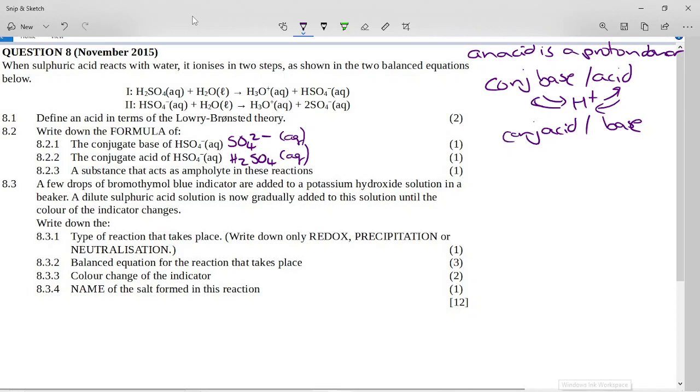Now it says to you a substance that acts as an ampholyte in these reactions. Now usually when you see the word ampholyte you're pretty safe putting down water. But in this instance you are not safe putting down water because look what happens to the water in both of these equations. In both of these equations the water forms the hydronium ion and accepts a proton, so the water is acting like a base in both of these. It is nowhere here acting like an acid.